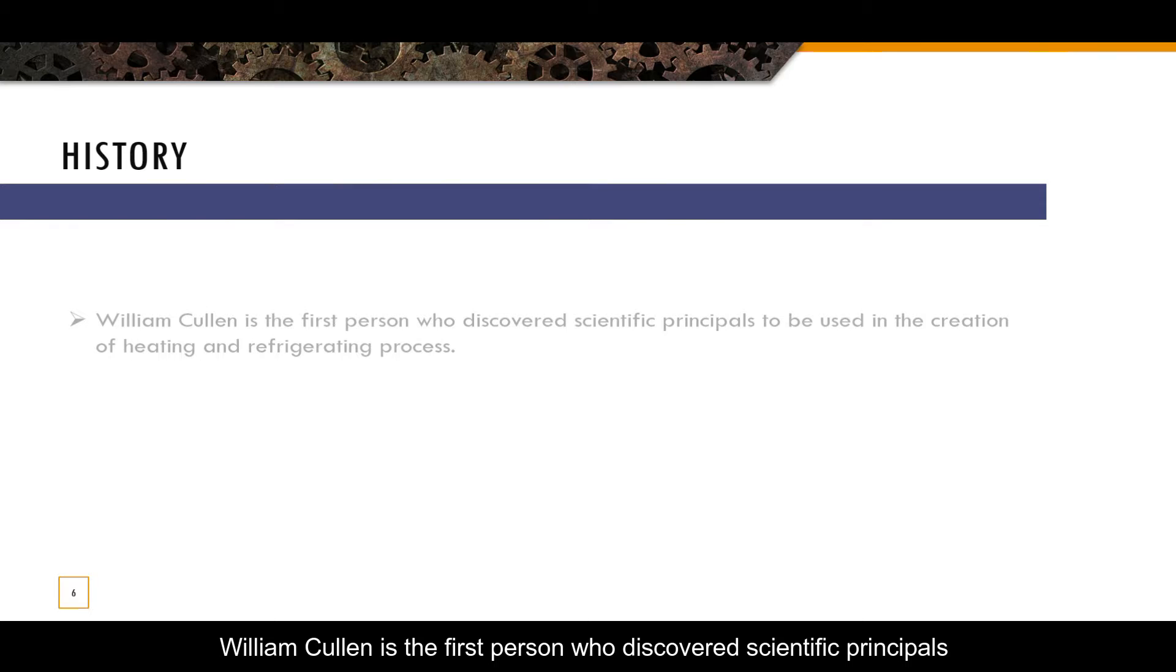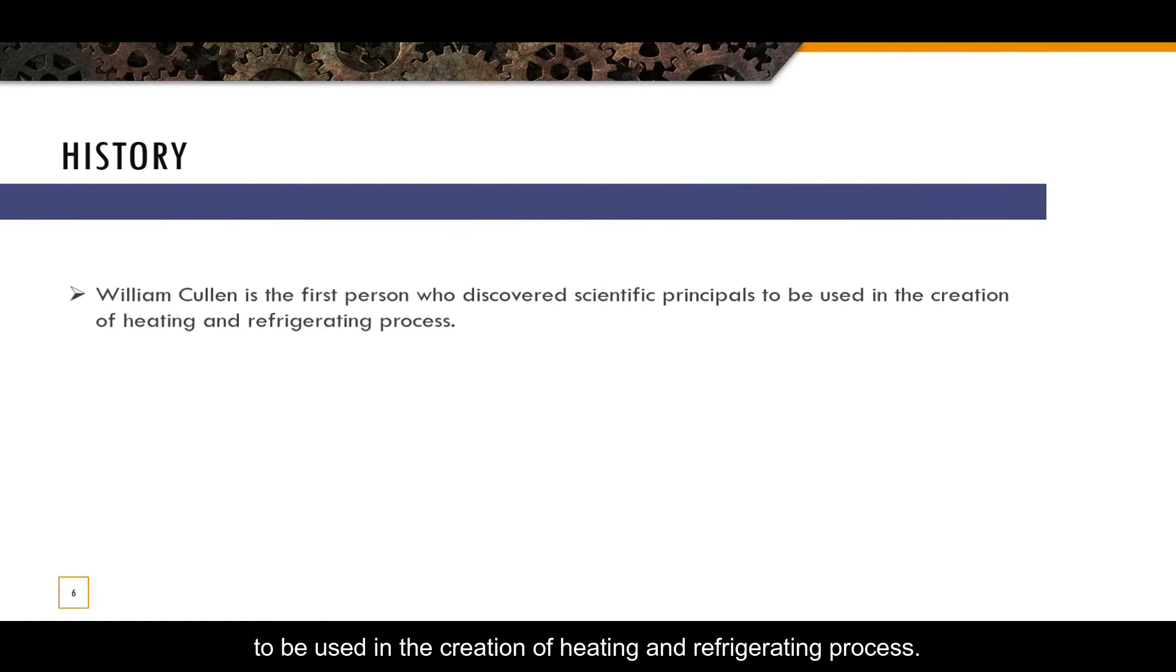William Cullen is the first person who discovered scientific principles to be used in the creation of heating and refrigerating process.